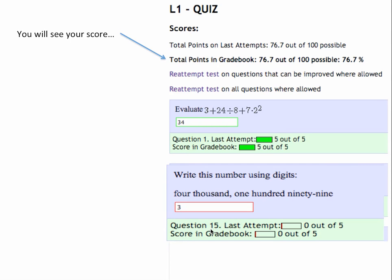Once you submit, you will see your score. Correct questions are in green. Incorrect questions are in red.